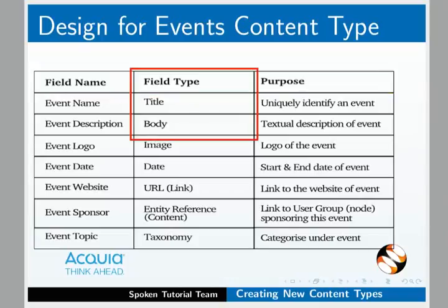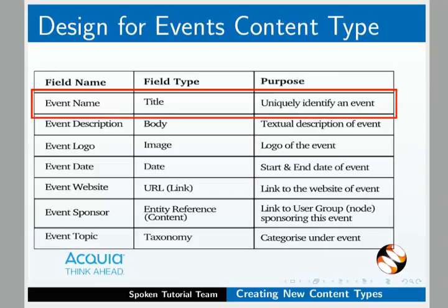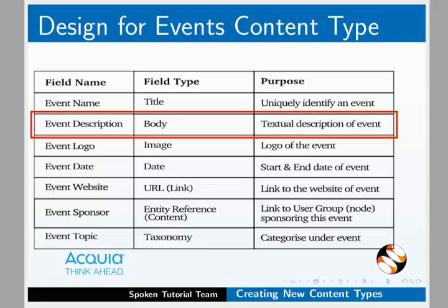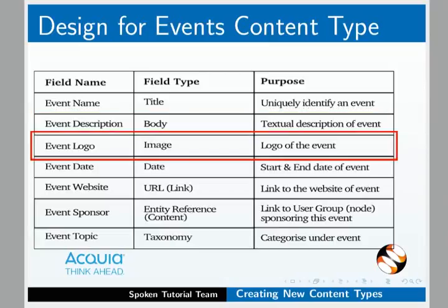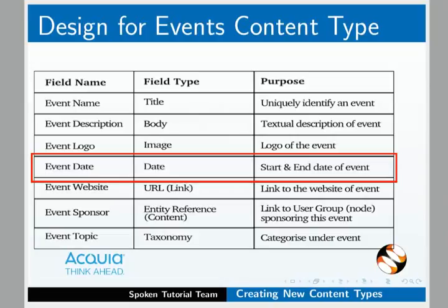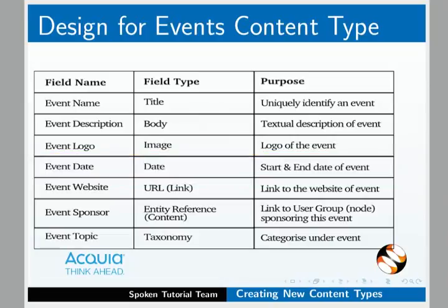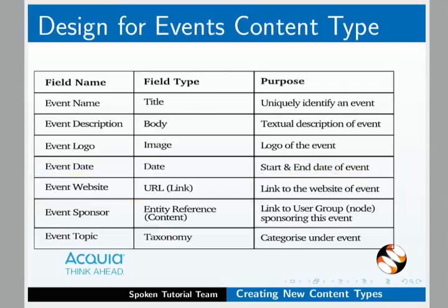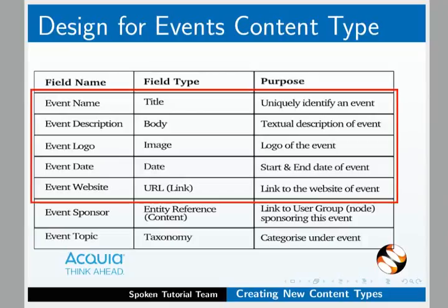All Drupal nodes have title and body fields defined by default. The event name can be the title field to identify this event uniquely. Event description can be the body field to provide some plain text description. An event logo is an image to display any special logo of the event. We need an event date of type date which captures the start and end date. The event can also have a separate event website, which is a URL link. We will cover only these five fields in this tutorial.